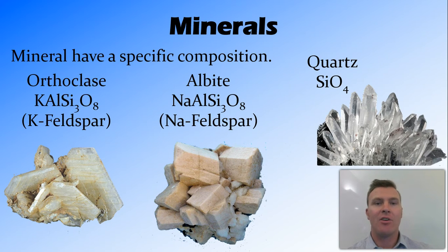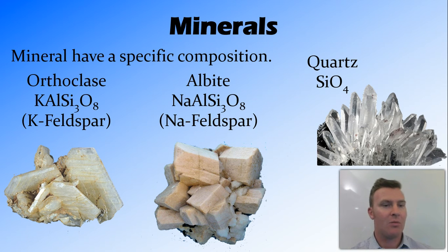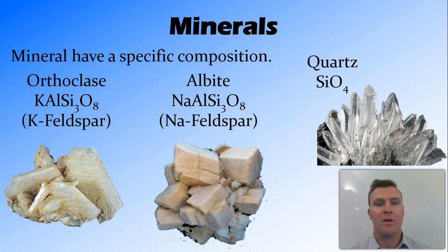So let's have a look at that first bit. The mineral has a specific composition. Here are three minerals: orthoclase, albite, and quartz. You can see that orthoclase has a composition which contains potassium, aluminium, silicon, and oxygen. At this stage you don't need to know these or memorize them — you don't really even need to know what those letters mean. All you need to know is that there is a specific chemical composition for minerals.